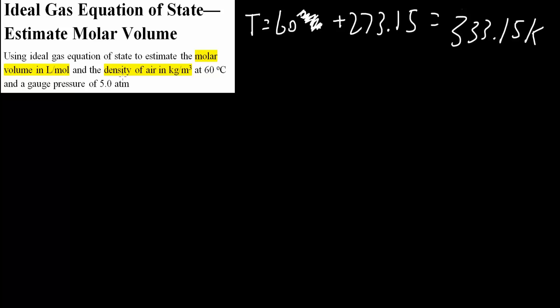Next, we have gauge pressure. Pressure equals gauge pressure plus atmospheric pressure. The atmospheric pressure is typically 1, so we get 5 atmospheres, which is given, plus 1 atmosphere, giving us 6 atmospheres.